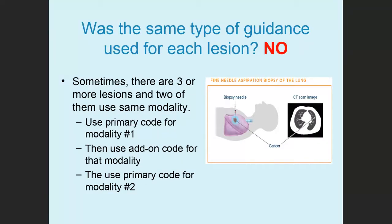Sometimes there are three or more lesions and two of them use the same modality, but another uses a different one. In that case, use a primary code for modality number one, then an add-on code for that same modality, and then a primary code for modality two.